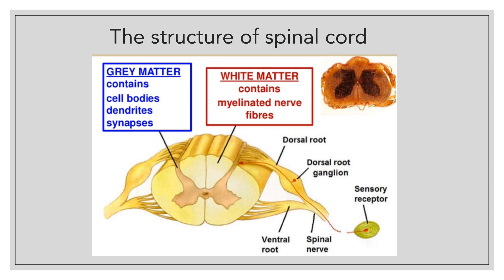The diagram shows the structure of a spinal cord. As you can see, there is grey matter which contains cell bodies, dendrites, and synapses, and white matter which contains myelinated nerve fibers. You can also see the dorsal root and dorsal root ganglion, and below that, the ventral root.